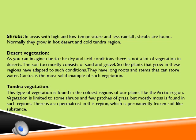Tundra vegetation is found in the high latitudes of the northern hemisphere, especially in Eurasia and North America, and in the high altitudes of mountains. During the short summer season when the snow melts, mosses, lichens, and short grasses cover the ground. These are called meadows.